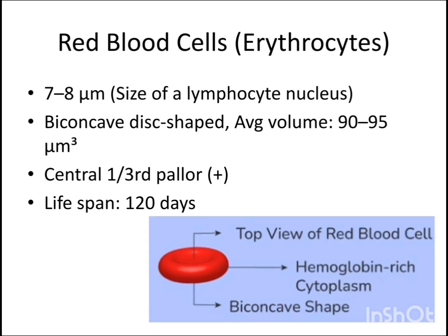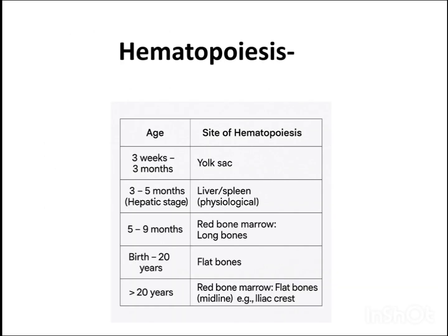Now coming to erythrocytes. Erythrocytes have a size of 7-8 micrometers, i.e., the size of a lymphocyte nucleus. They have a biconcave disc shape, an average volume of 90-95 micrometer cube, central one-third pallor, and a lifespan of about 120 days. As you can see in the picture, there is the biconcave shape and hemoglobin-rich cytoplasm in an erythrocyte.